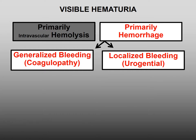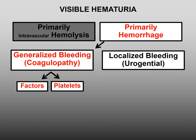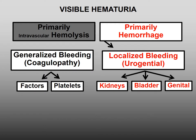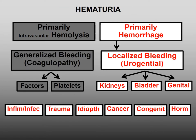Hemorrhage is either due to a generalized coagulopathy or localized bleeding. Factor and platelet deficiencies and abnormalities cause generalized bleeding. A break or tear in the lining of the urogenital tract causes local bleeding. Local bleeding is commonly caused by infection, trauma, or cancer.